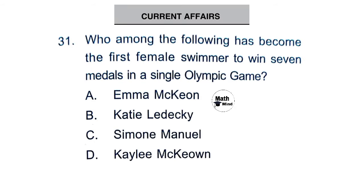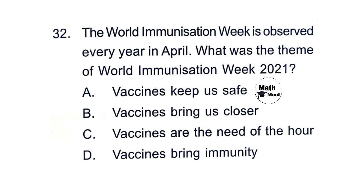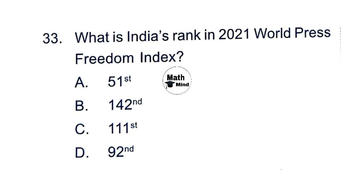Current Affairs. Question 31: Who has become the first female swimmer to win seven medals in a single Olympic game? Option A is correct: Emma McKeon. Question 32: The World Immunization Week is observed every year in April. What was the theme of World Immunization Week 2021? Option B is correct: Vaccines Bring Us Closer. Question 33: What is India's rank in the 2021 World Press Freedom Index? Option B is correct: 142.